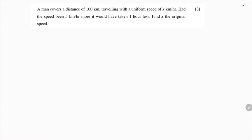A man covers a distance of 100 kilometers traveling with a uniform speed of x kilometers per hour. Had the speed been five kilometers per hour more, it would have taken one hour less. Since speed equals distance divided by time, time equals distance divided by speed.